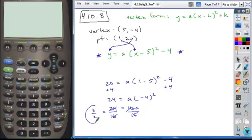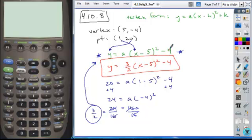And so all you have to do now is plug this back into that equation. And you have your answer. So 3 halves times the quantity x minus 5 squared minus 4. And that is your answer. So you can see it's relatively painless as far as the calculations go.